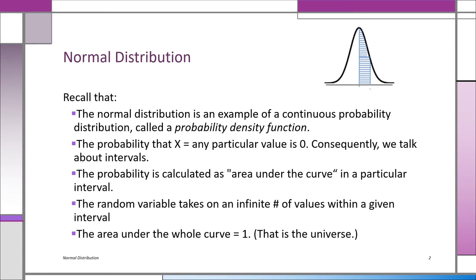We talk about the probability as the area under the curve. If we're looking at the probability that the random variable will take on a value in a given interval — say between zero and one — if we can get the area under the curve in that interval (a definite integral) and divide by the area under the entire curve, we get the proportion of times the random variable takes on a value inside that interval. A proportion equals a probability, so that's how we get our probability.